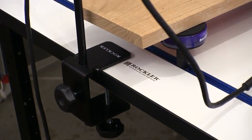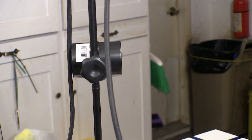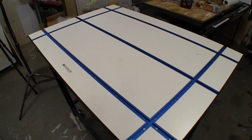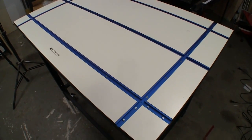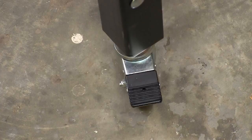This fitting accepts the vacuum hose and can be set at whatever height you need. That lets you put a vacuum source right at the work surface or wherever you need it to best fit your job.